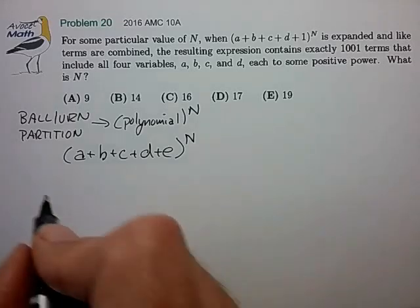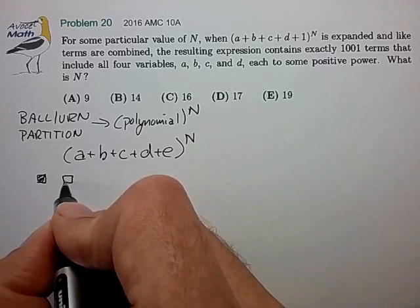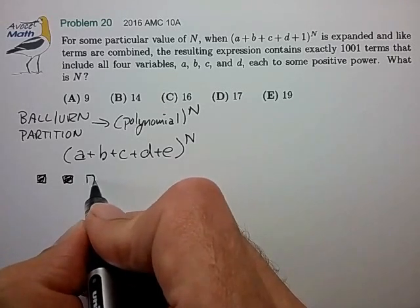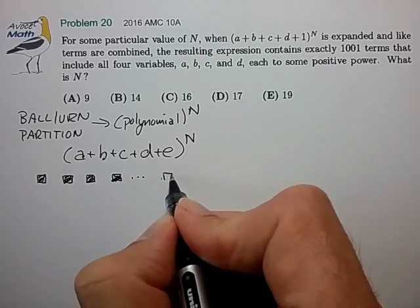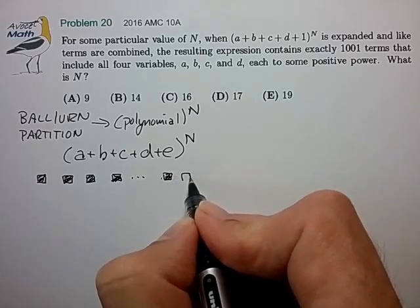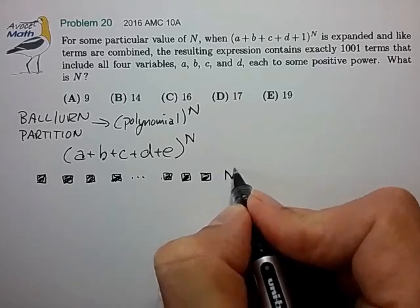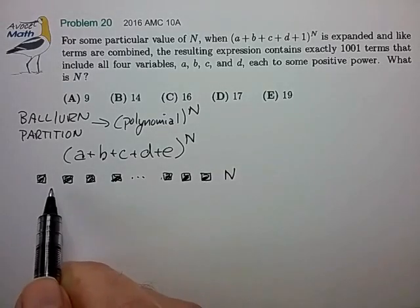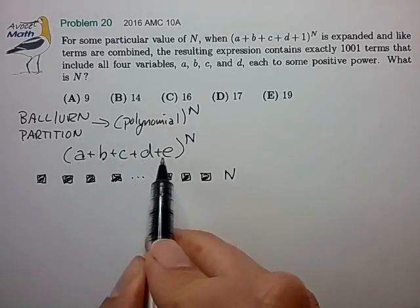So we can sort of look at this now as having these various exponent markers as I call them. And we have n of these.